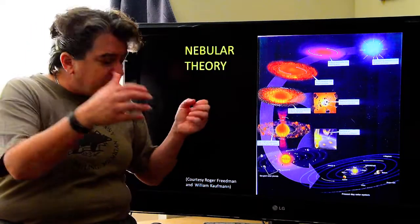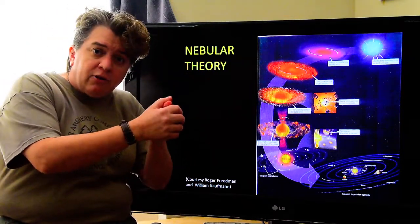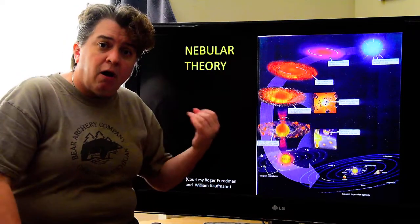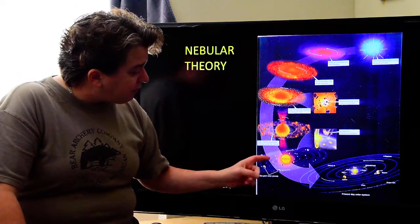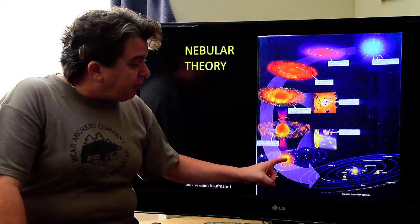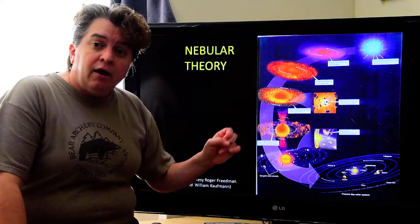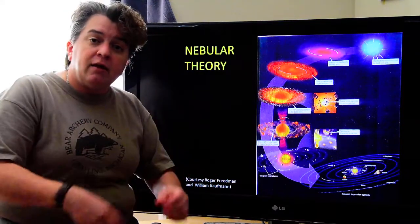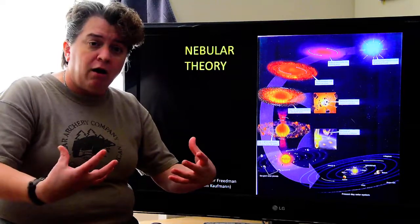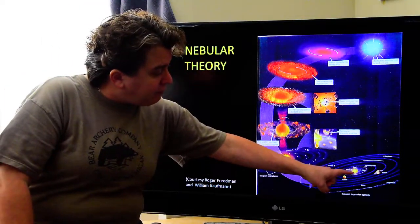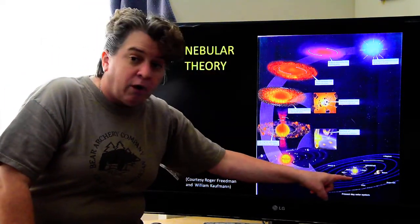All right. So, all these pieces start accumulating, hitting each other, getting bigger and bigger and bigger, ultimately forming our planets. Fusion is going to begin in the sun. And when fusion begins, that becomes a star. And so, now we have a solar system with all of our planets orbiting it.